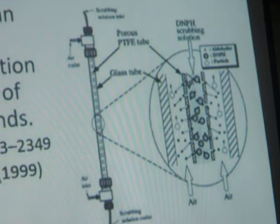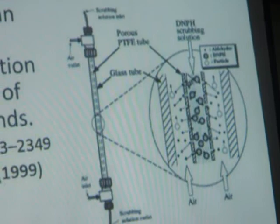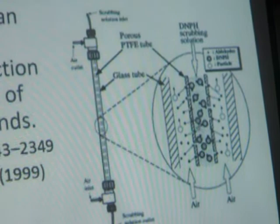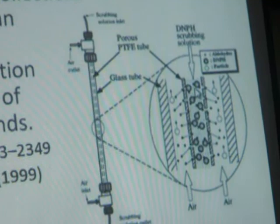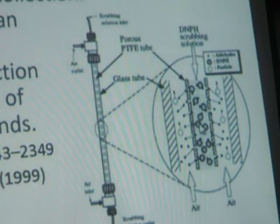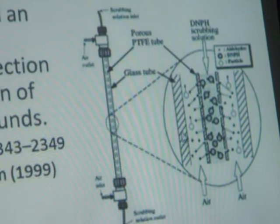There are a couple of different types of tubing that have been used — porous Teflon tubing being one. Diffusion scrubbers will collect carbonyl compounds, so the approach works up to a point.